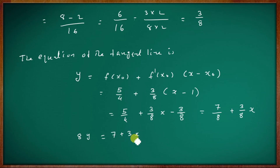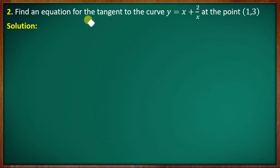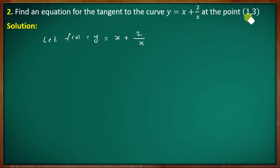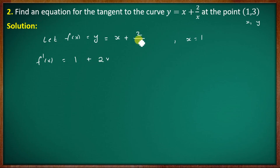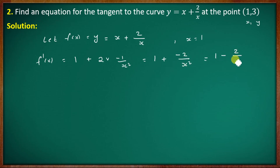Next, find the equation of the tangent line to the curve y = x + 2/x at the point (1, 3). Let f(x) = y = x + 2/x. The derivative is f'(x) = 1 + 2·(−1/x²) = 1 − 2/x².